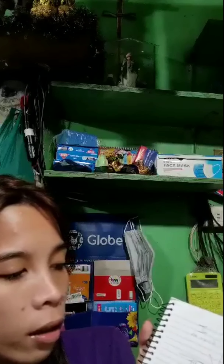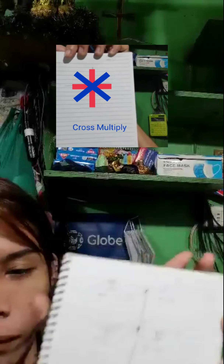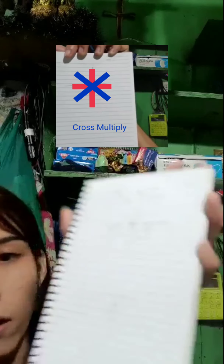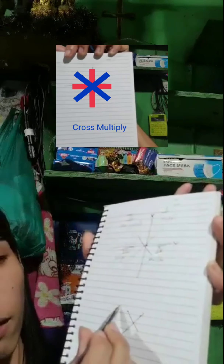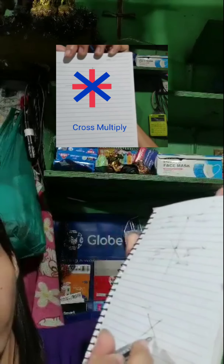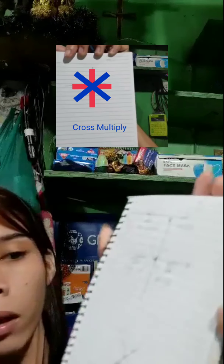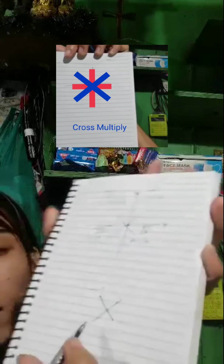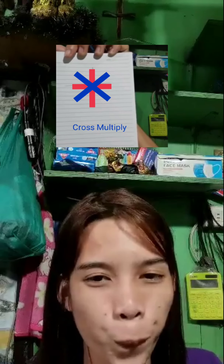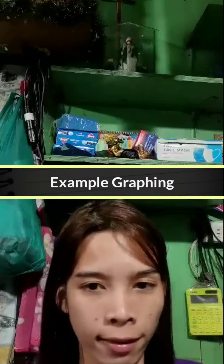So if you are going to cross-multiply the graph, it will look like this. Above the line it is negative and positive, and below the line it is positive and negative. That is the difference. I am going to show you an example on graphing.